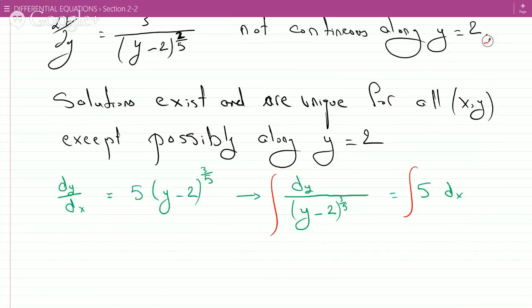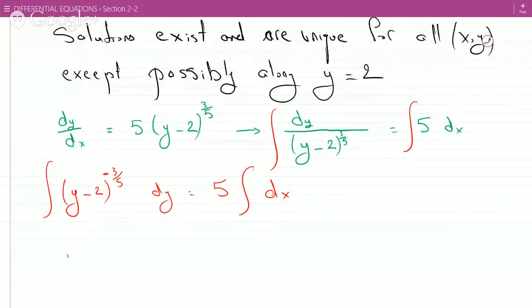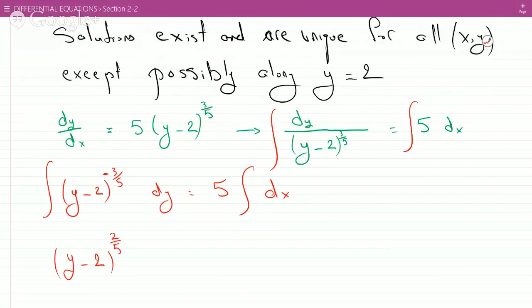So we can pull this up to get ∫(y-2)^(-3/5) dy, pull the 5 outside since it's a constant, and we can integrate this to be (y-2)^(2/5) and multiply by 5 halves.